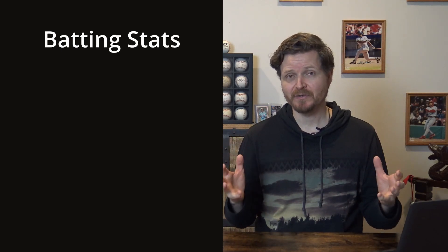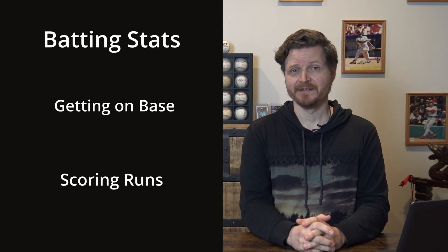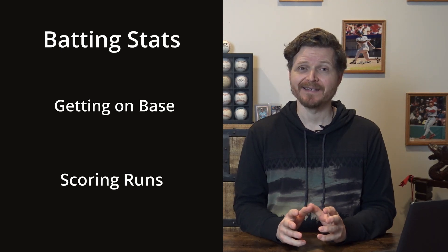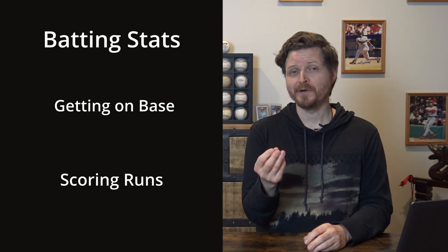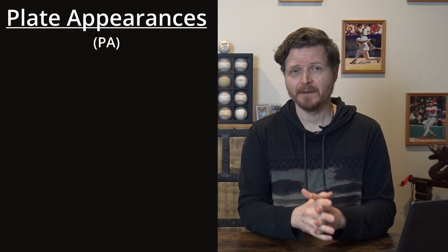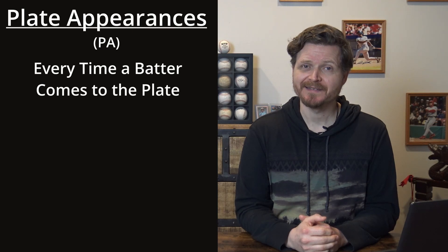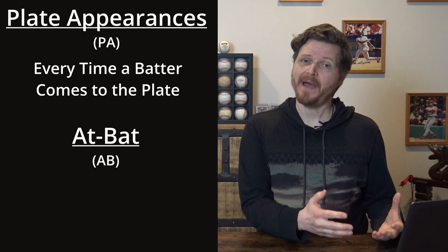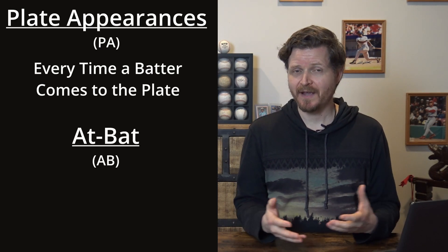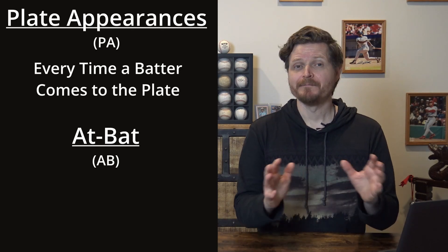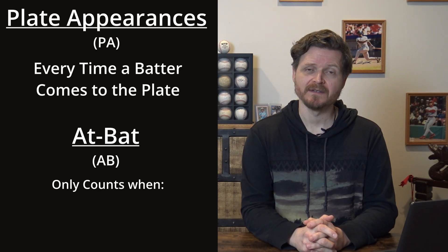Batting, just like pitching, is based off of two general ideas: getting on base and scoring runs. Although there's an entire team of nine batters that hit for each team every game, batting stats have always been considered in isolation — so how good is that player at getting on base and scoring runs? The first most basic counting stat for batters is plate appearances. Every time a batter comes to the plate it's counted as a plate appearance, no matter what the result is. A closely related stat is the at bat — so what's the difference?